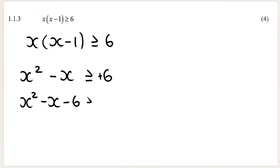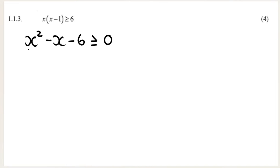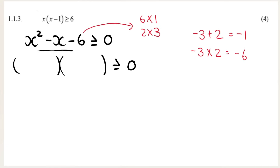We can see this is a trinomial, so we need to factorize it using our method. In the brackets I get (x minus 3)(x plus 2). After factorizing, we use each bracket to get our critical values. To get the critical values, take each bracket and pretend you are making it equal to zero.